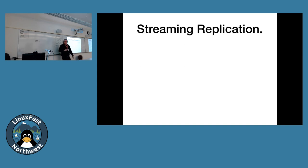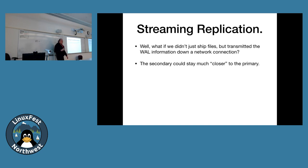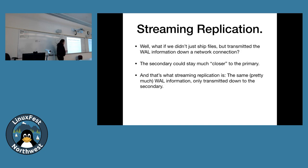That's what we had in version 8. It works pretty well but had limitations — throwing files around feels very 1997. What if instead we just opened a network connection and streamed the WAL information directly? That way the secondary could stay much closer to the primary without waiting for each 16-megabyte segment to accumulate. That's all streaming replication is: the secondary opens a TCP/IP connection to the primary and the primary pushes WAL records down in real time. They are essentially the same technology.